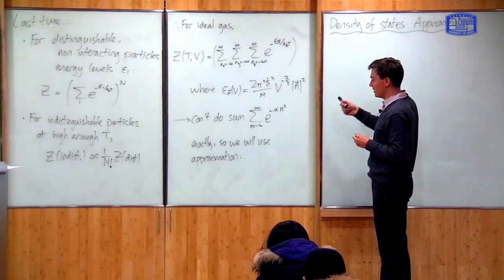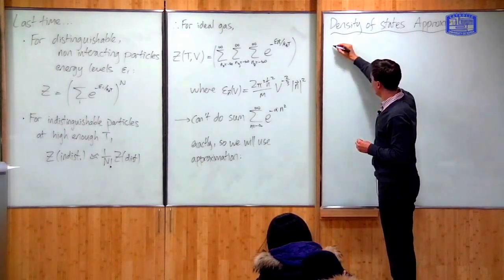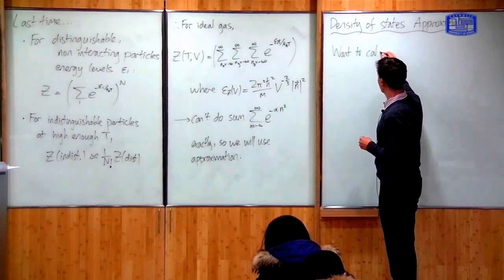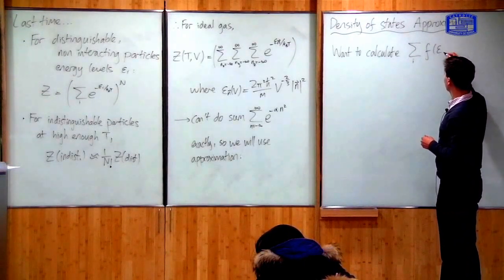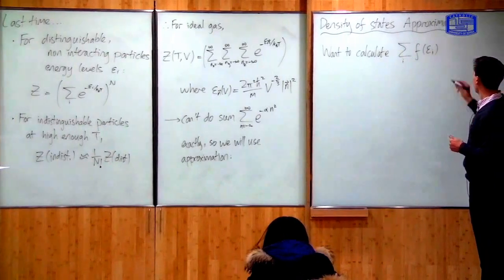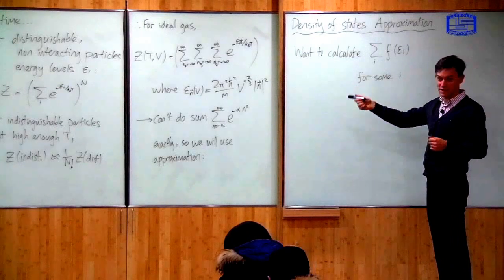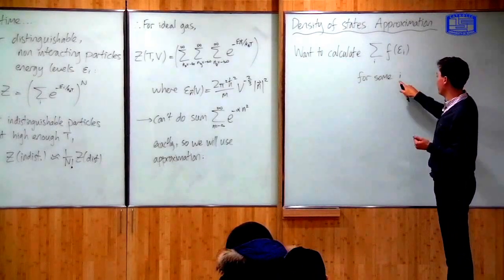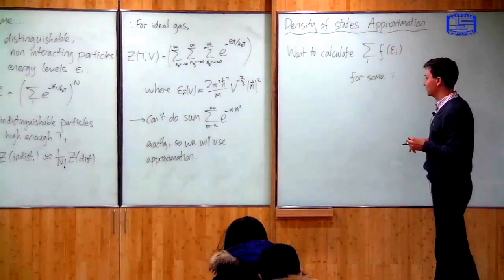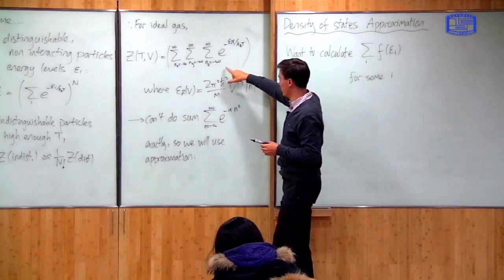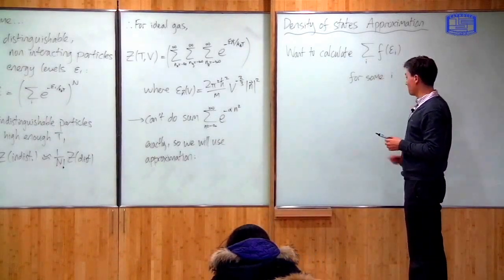What we want to do in general is a sum of some function of energy over certain energy levels. We want to calculate a sum which looks like a sum over energy levels i of some function of the energies ε_i, where i is just a label or index of energy levels. In the case of an ideal gas it's actually a vector of integers, but all it is is some label for all of the different energy levels in the gas. That's exactly the kind of sum we want to do here — we're summing over energy levels of e to the minus energy divided by k_B T, which is some function of energy.